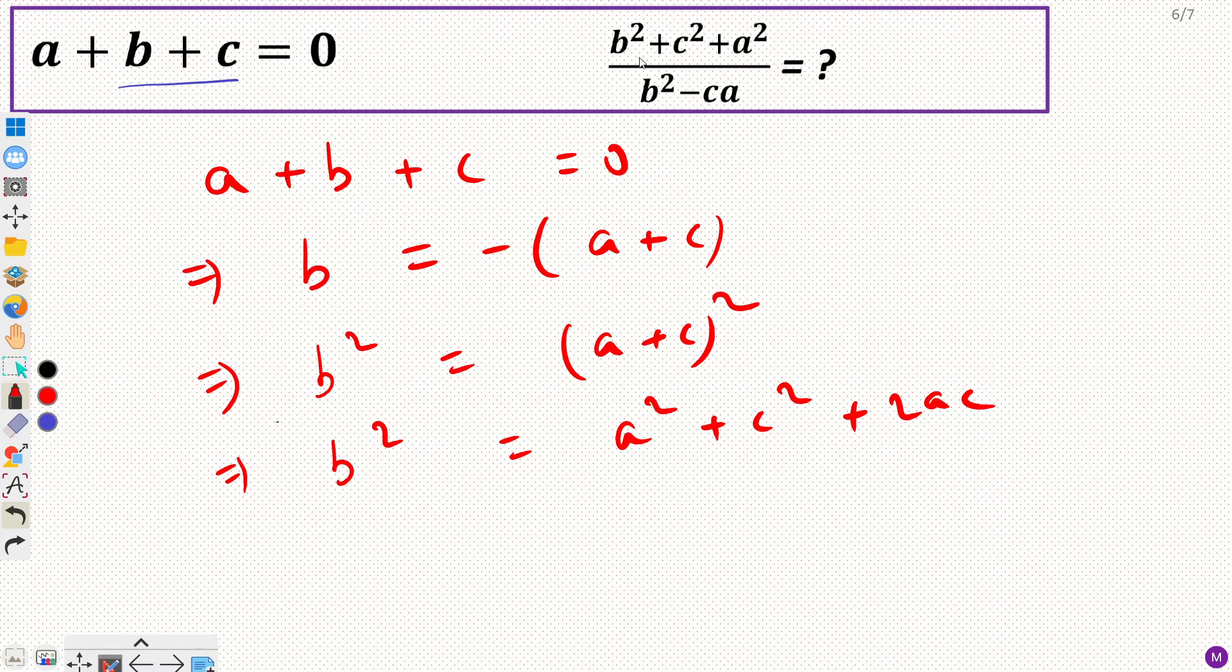Now I want b squared plus c squared plus a squared. So if I add c squared plus a squared to both sides...